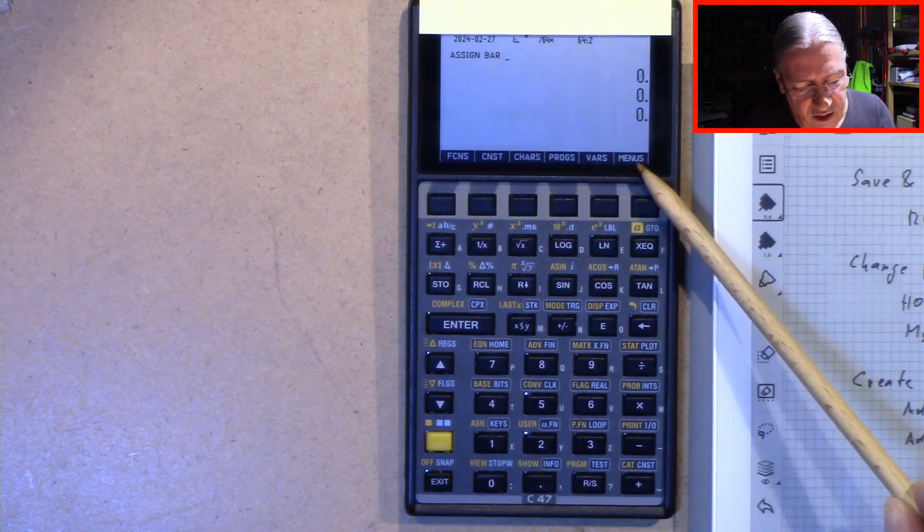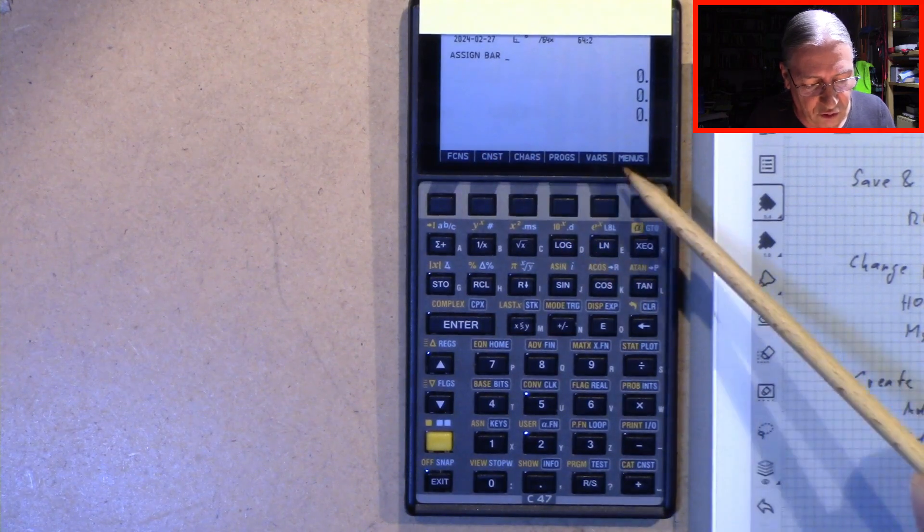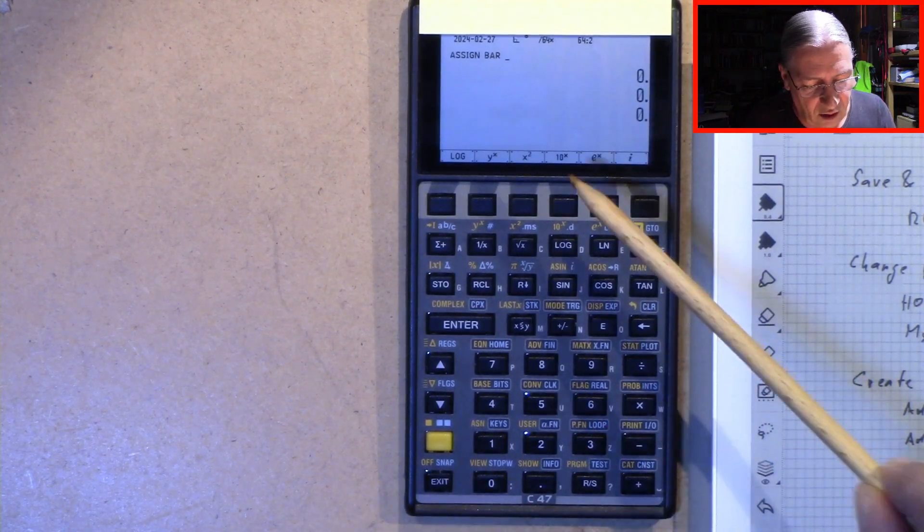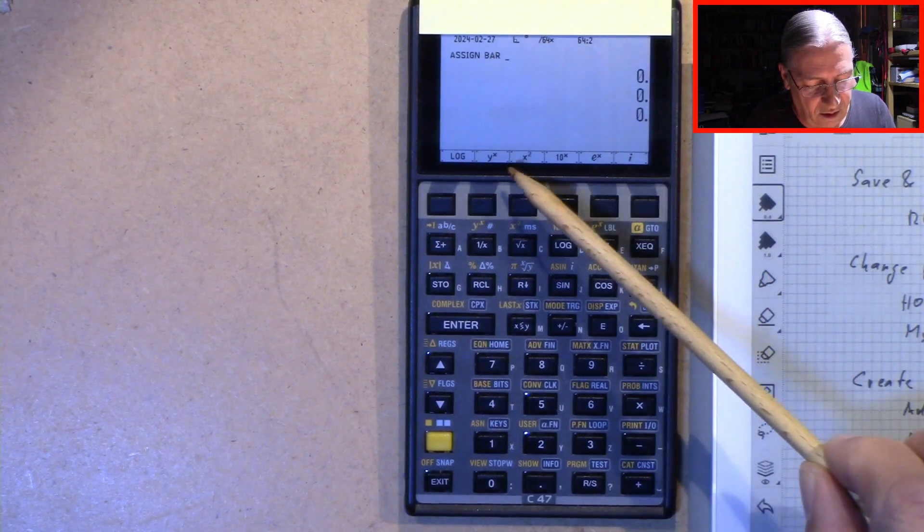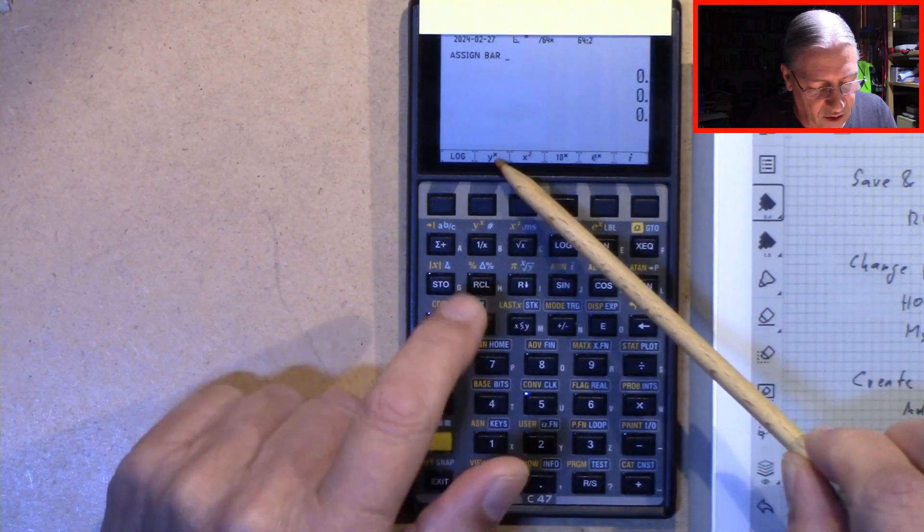But what we have here is still the menu from the catalog. And we have to get rid of this. So we press exit. And now we see our my menu and can position the link to the menu bar right here.